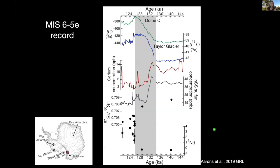Jumping right into the Taylor Glacier record: we drilled an ice core there in 2015 and made a variety of measurements on it. We're showing them with respect to the Dome C record from the interior of East Antarctica. We're looking at ice from marine isotope stage six, a glacial period and the transition into the last interglacial. I'm showing proxies for dust and marine biogenic activity, and at the bottom strontium and neodymium isotope compositions — the traditional provenance indicators of dust. Variations in these isotope compositions indicate a change in dust source region. The dust from marine isotope stage six has a very distinct composition from the dust found during the last interglacial period.